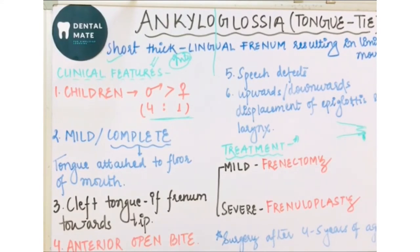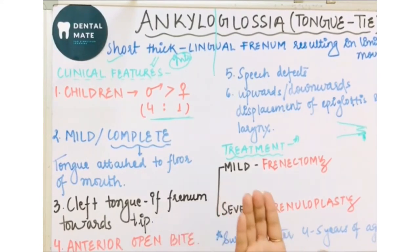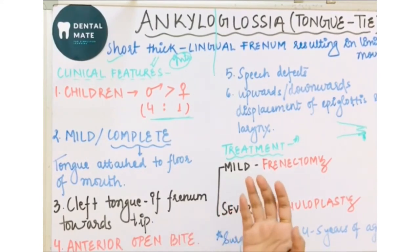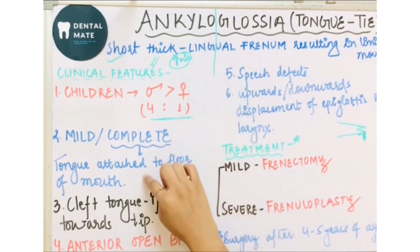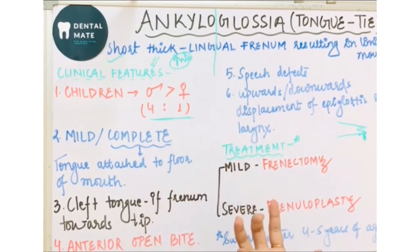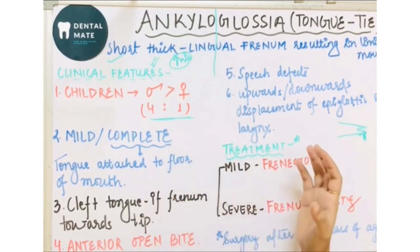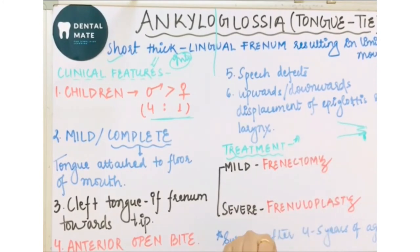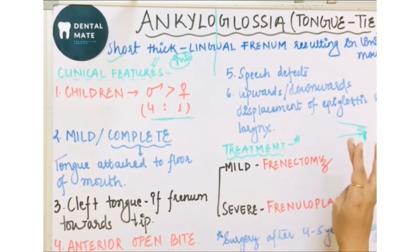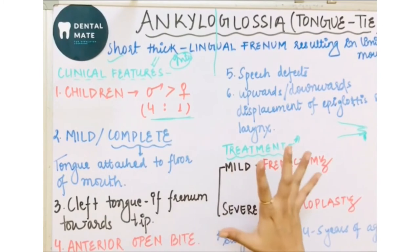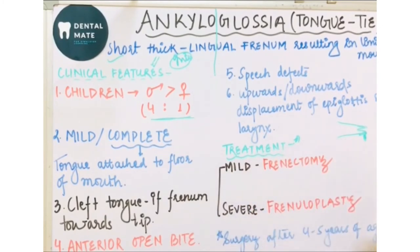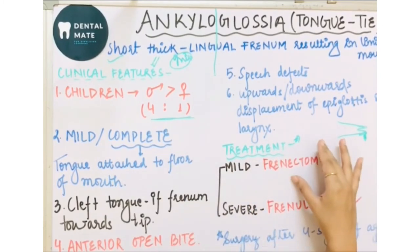Ankyloglossia can also cause anterior open bite. This occurs because of the tongue tie and limited tongue movement — if the tongue cannot be raised, the swallowing pattern changes and an anterior open bite develops. Additionally, there can be speech defects, and upward or downward displacement of the epiglottis and larynx.